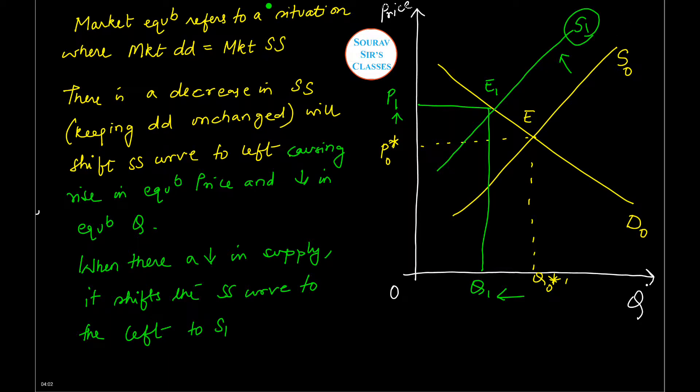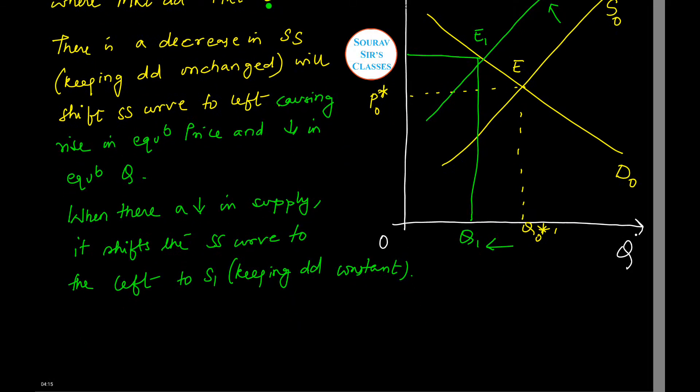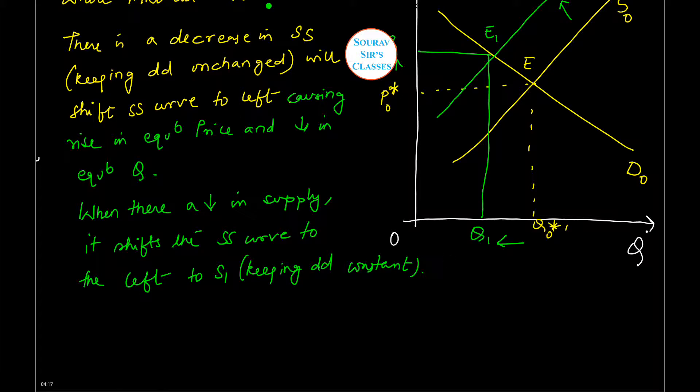Now we can see that keeping demand constant, it will lead to excess demand equal to, say, AB.